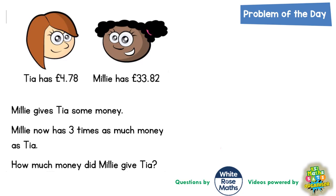Welcome problem solving fans to another problem of the day. This one is all about Millie and Tia, with Millie being extremely generous and sharing some of her money with Tia. Tia has £4.78 to start with and Millie has £33.82. Millie gives Tia some money, and Millie now has three times as much money as Tia. How much money did Millie give to Tia? We are going to use the strategy known as a bar model to help us solve this question.